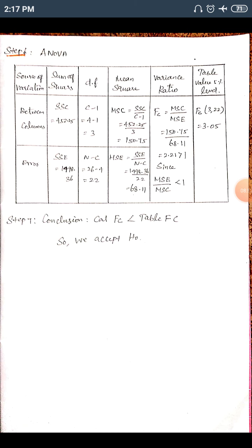Step 7 — Conclusion: Comparing the calculated value (2.21) with the table value (3.05), the table value is higher. Since the calculated F < table F, we accept H0. Therefore, there is no significant difference between the four brands of lamp.